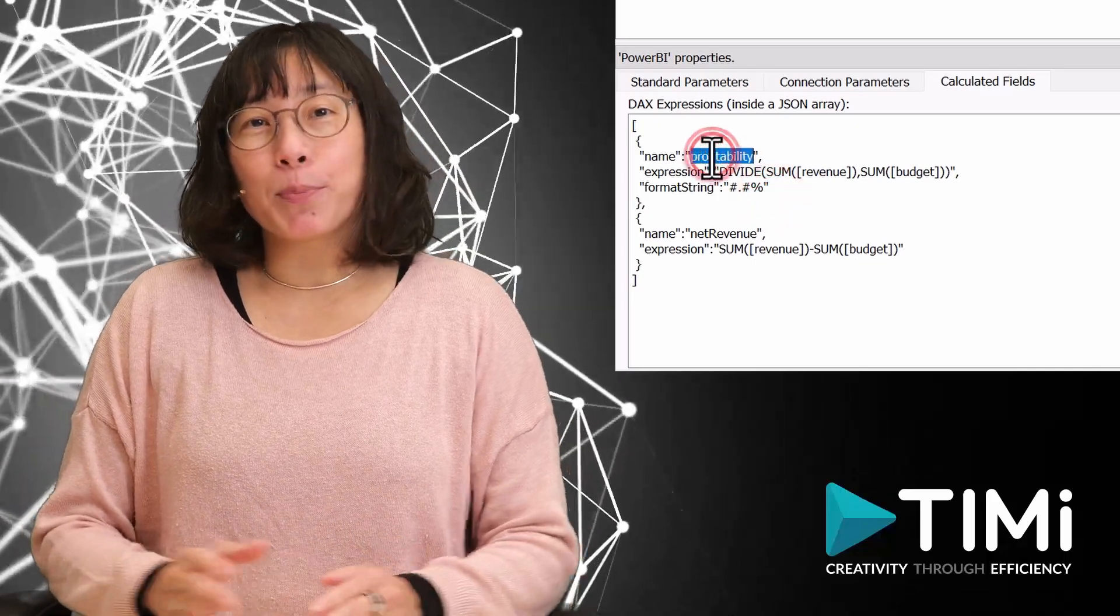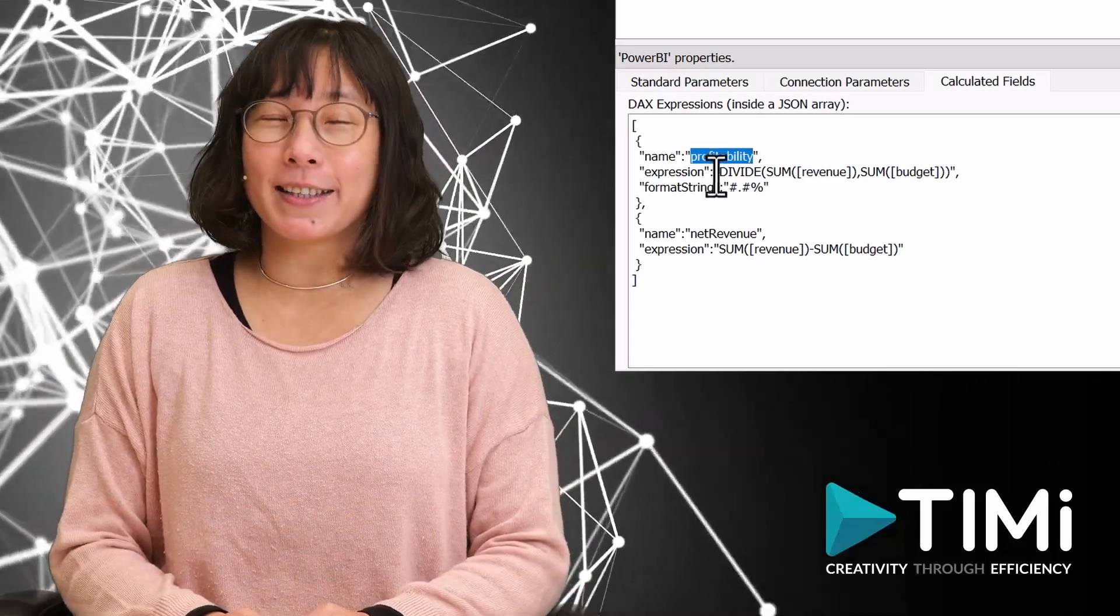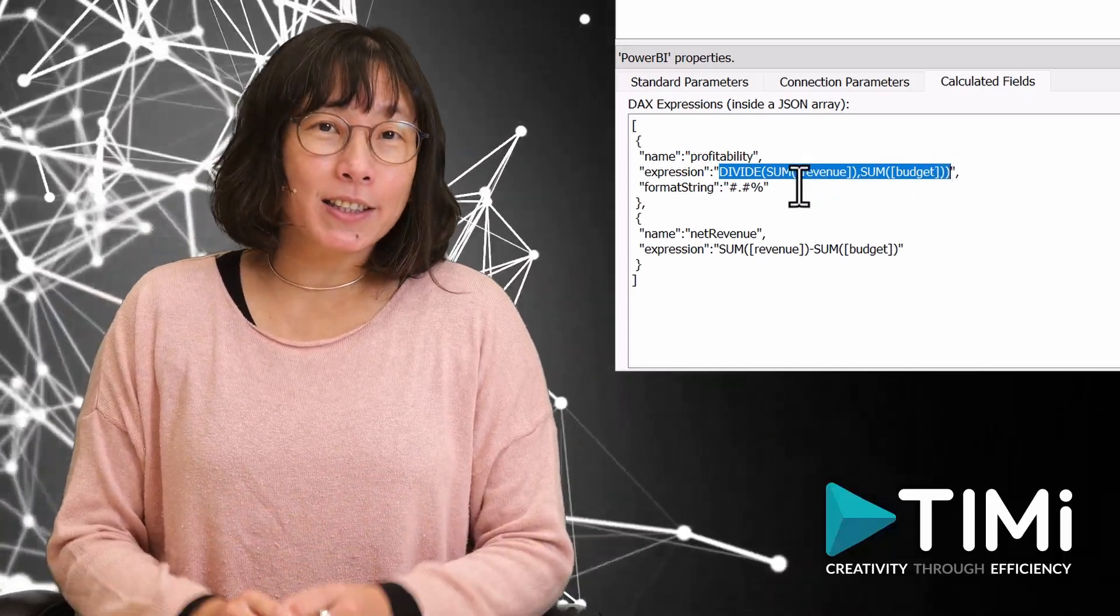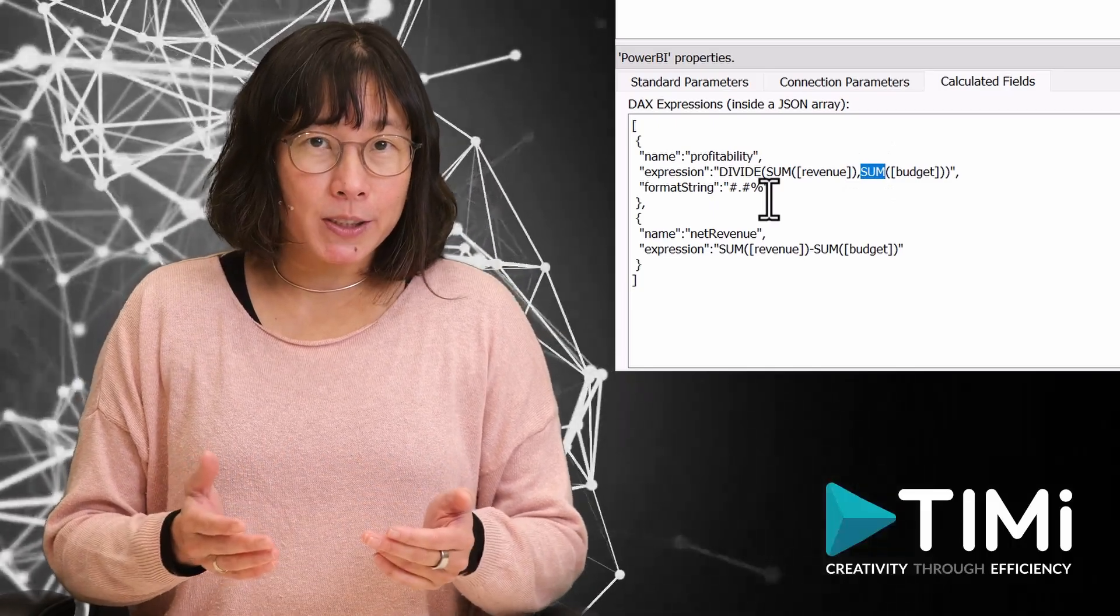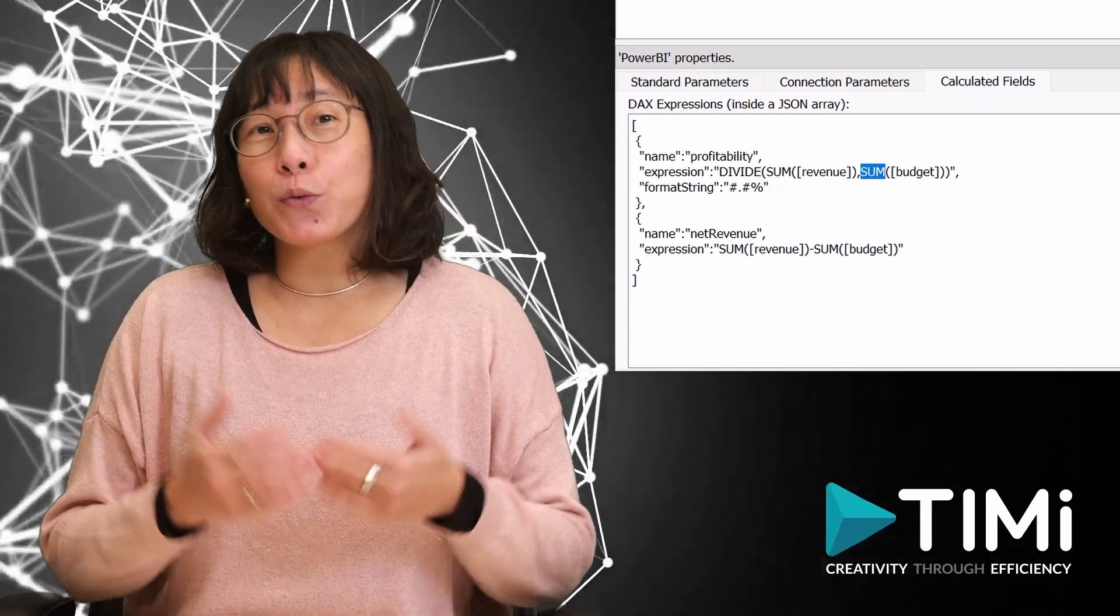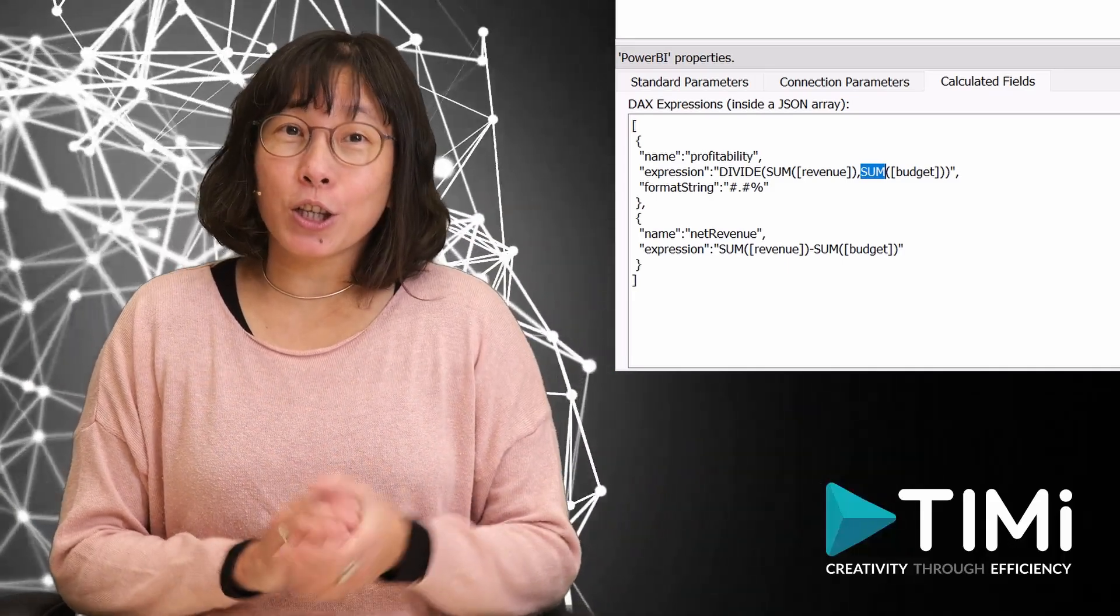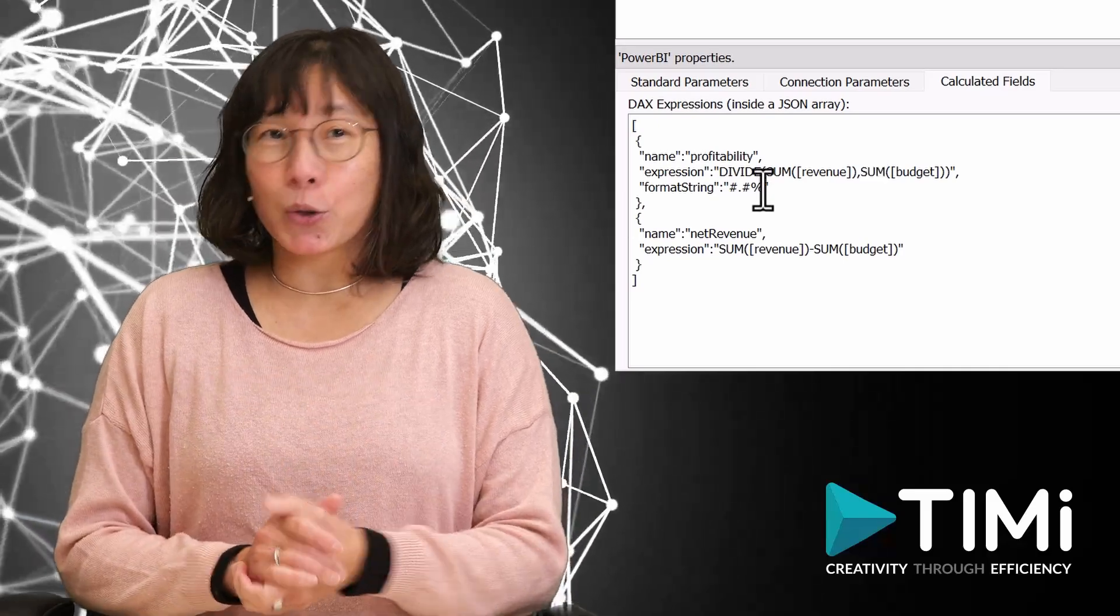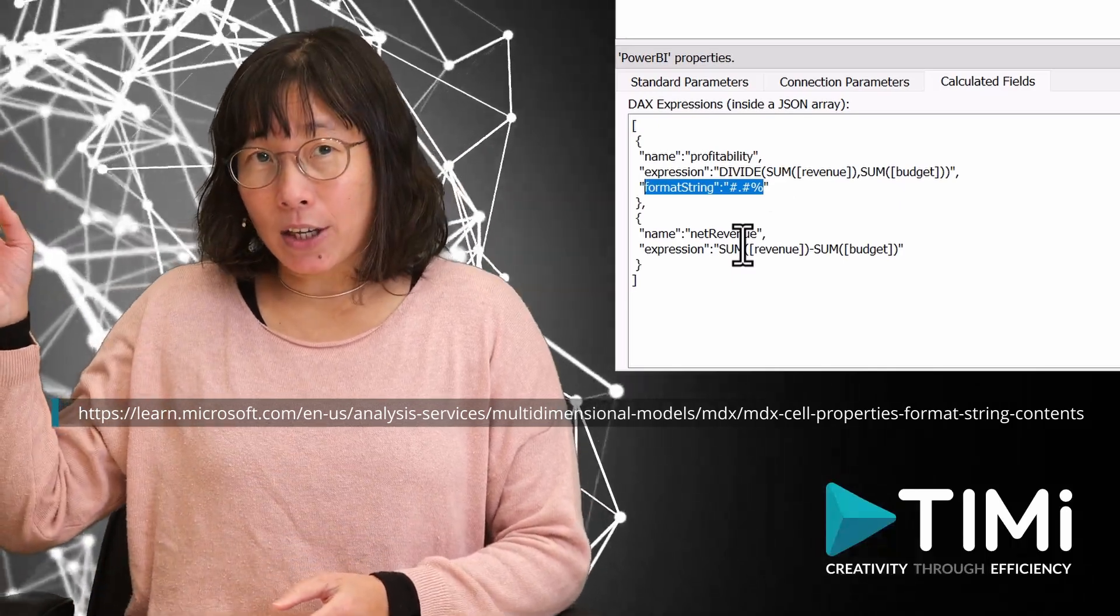The first calculated field is named profitability. It is defined as the ratio of the sum of all the revenues divided by the sum of all the budgets. There is a sum operation because we will ask Power BI to aggregate the revenue and the budget per year to get a general idea of the evolution of the profitability of the movies over the years. The profitability is a ratio of two values. And when I am working with ratios, I always like to see them as percentages because it's more meaningful to me. So here I'm using a specific format string to display my ratio as a percentage. You can click here to know the exact syntax of these formatting strings.